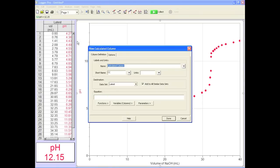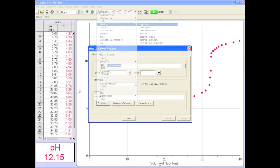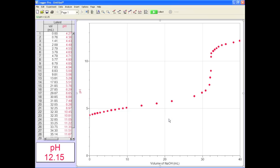Click on data, new calculated column. In the first box, name the function, say, first derivative. Give it a short name too. Now press the functions button, find calculus, and select derivative. Now press variables and hit pH. That's it.